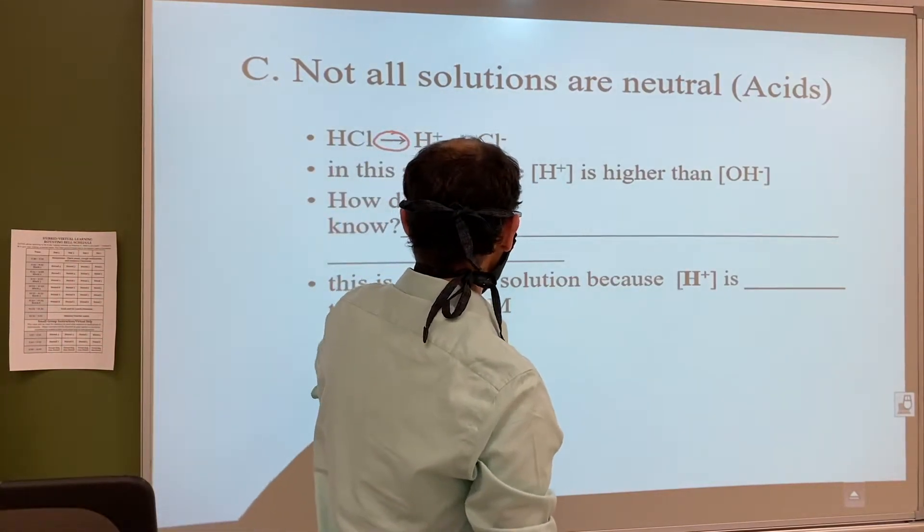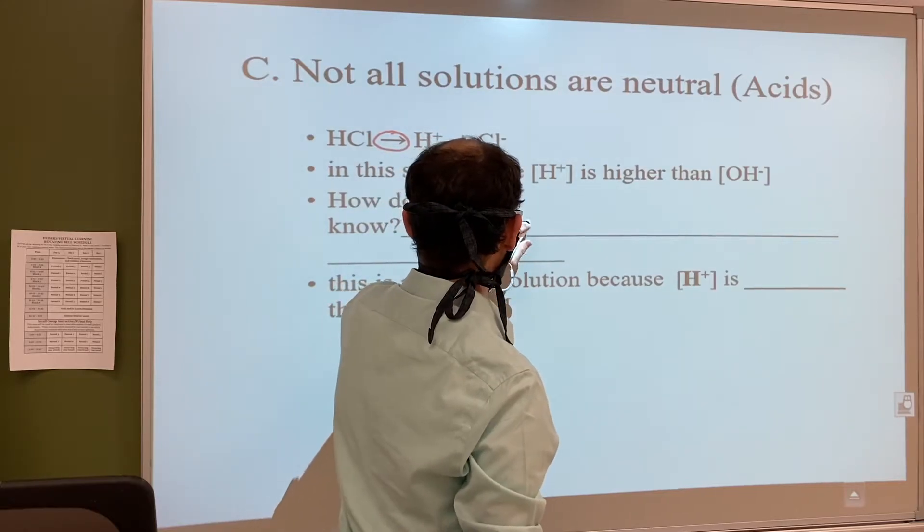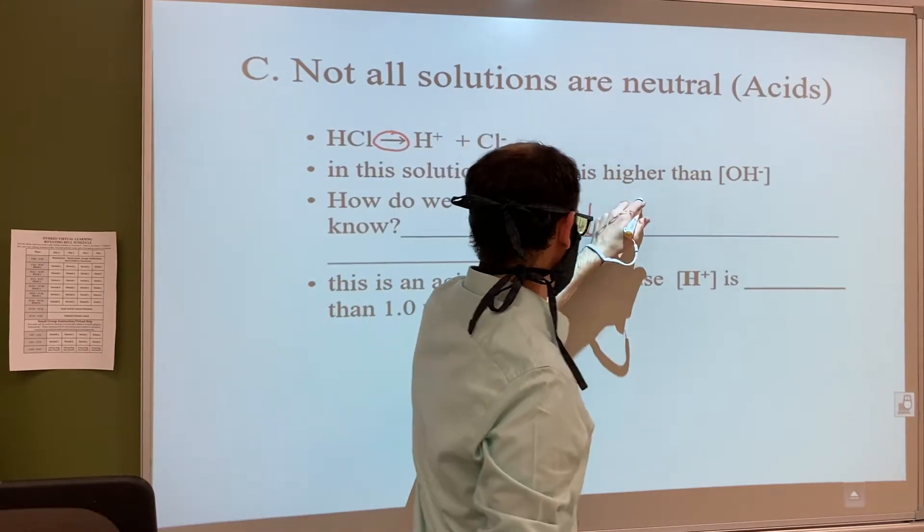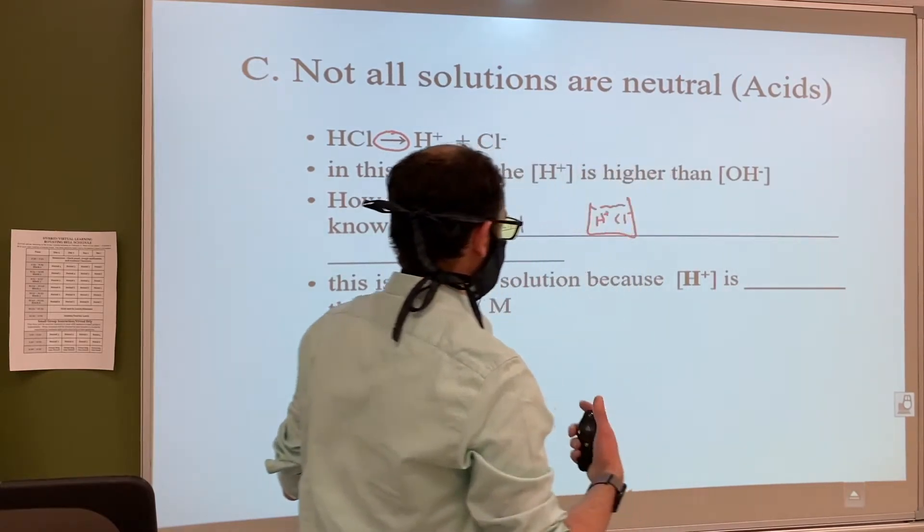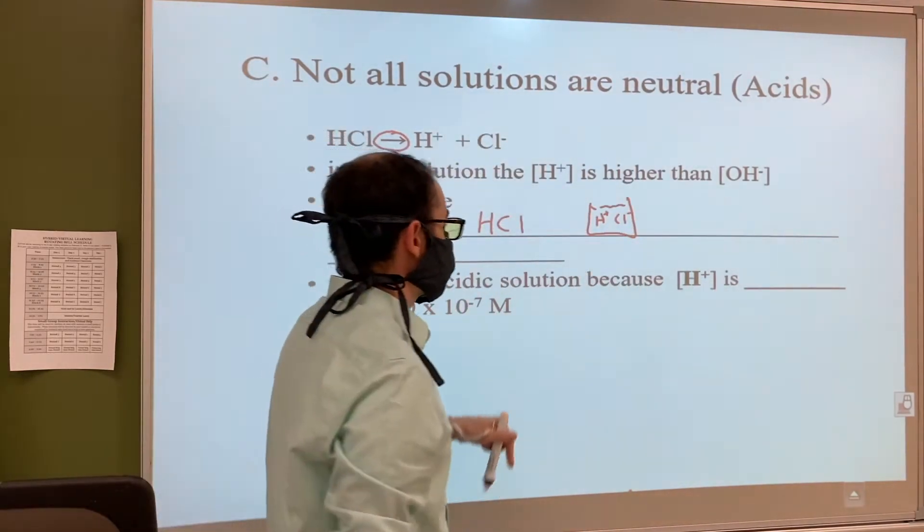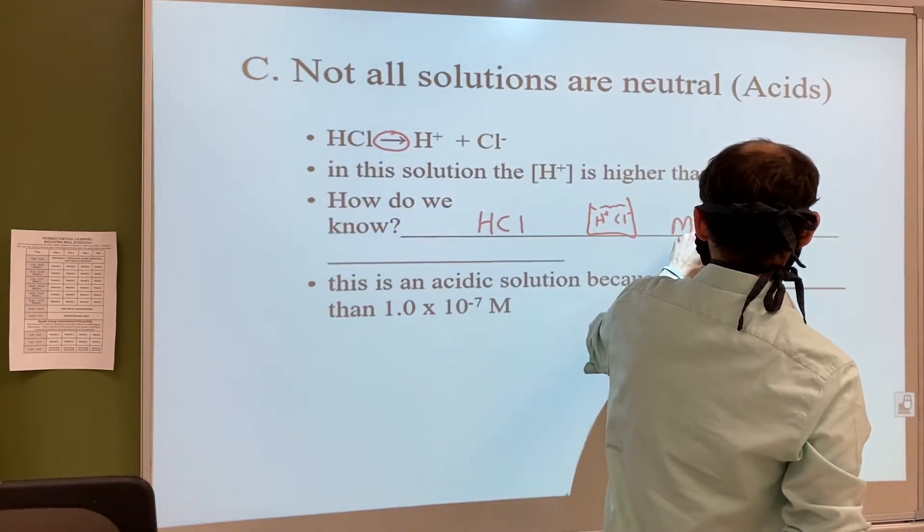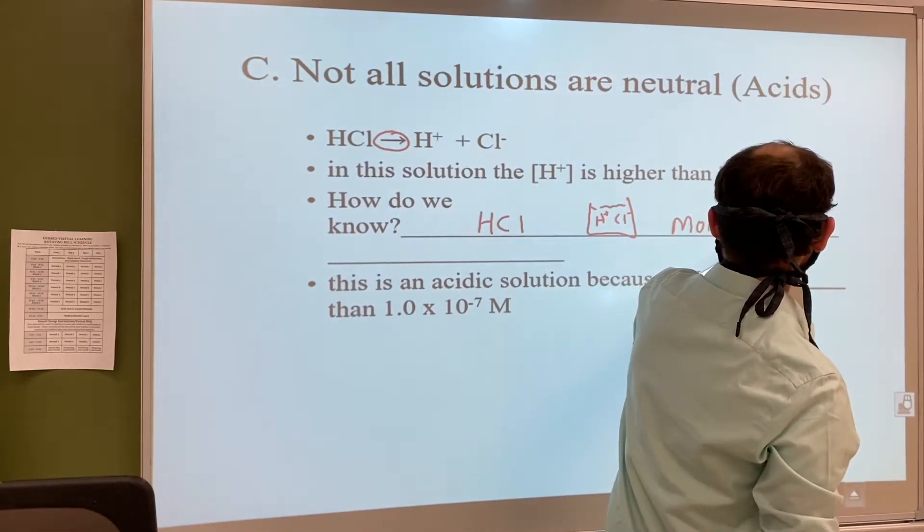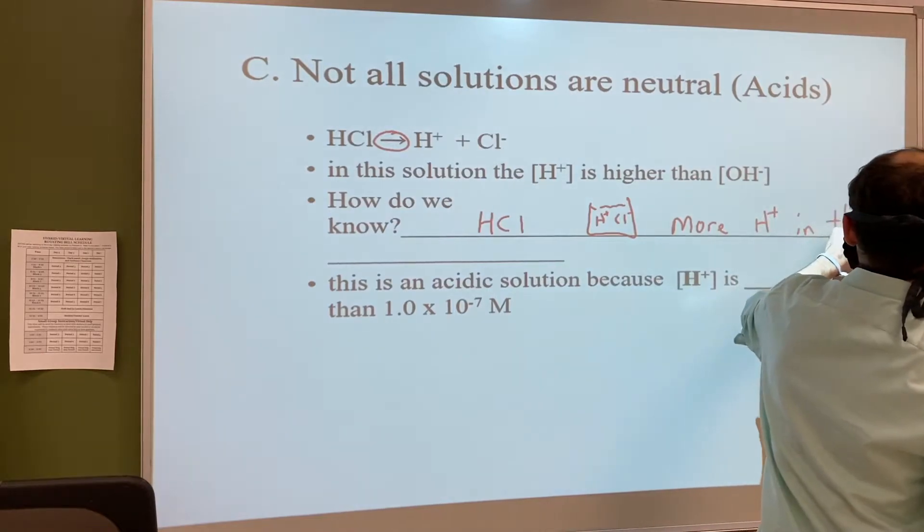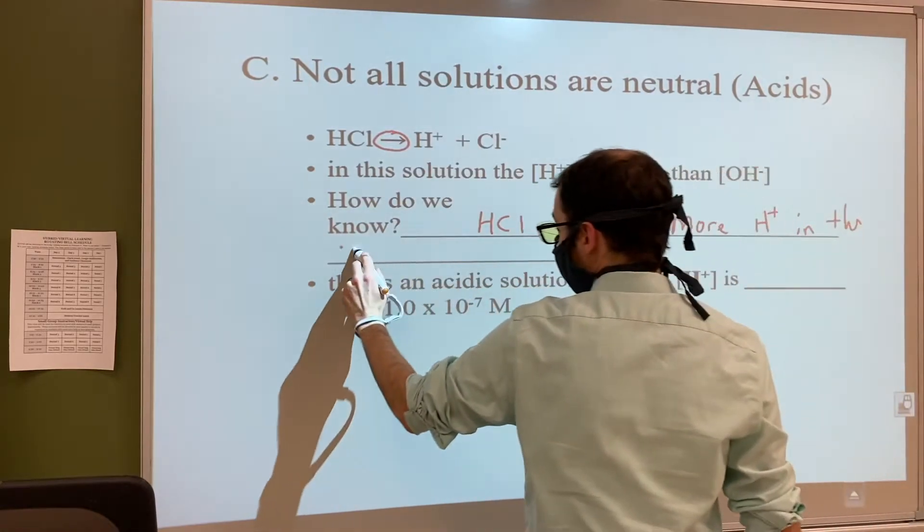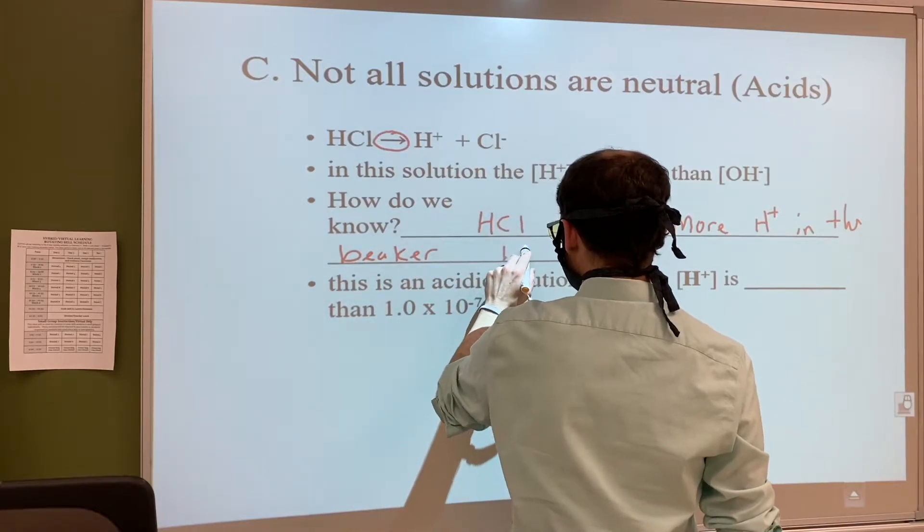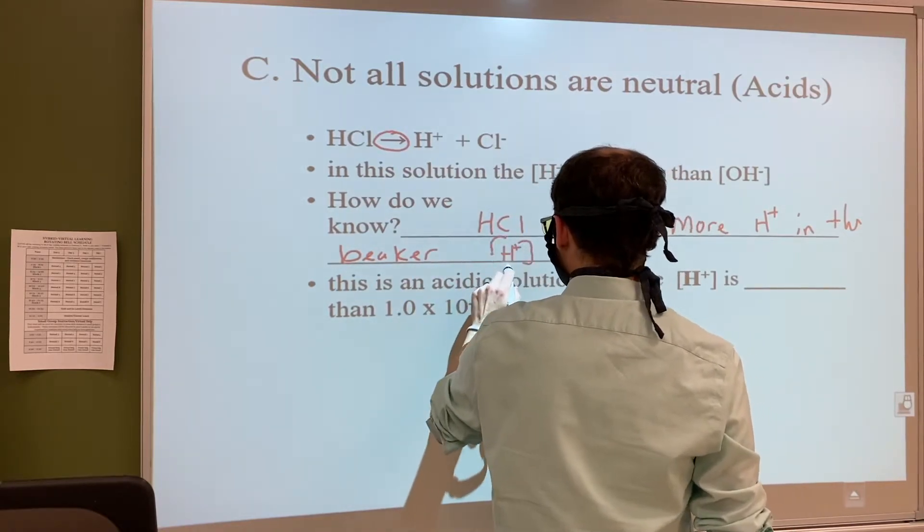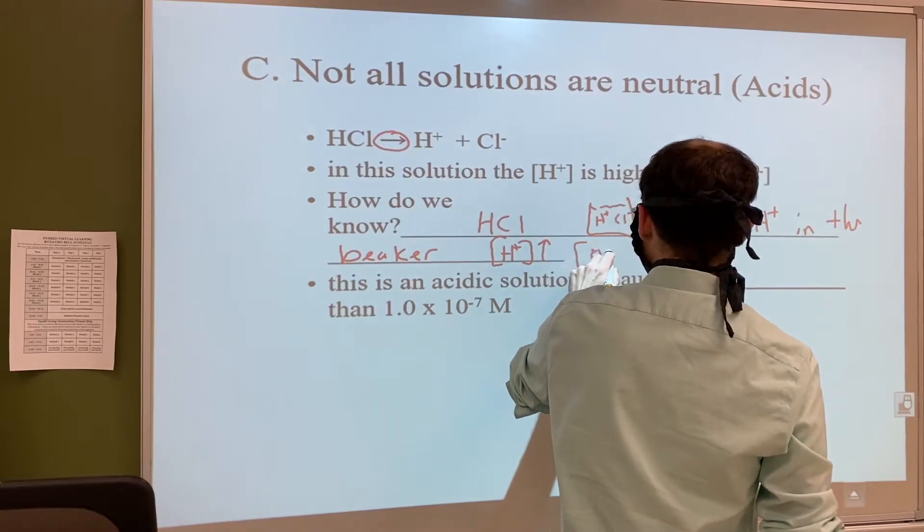How do we know that? Well, as you add HCl it's going to break up into H+ and Cl-, so there's just going to be more of it. There's going to be more H+ in the beaker. And as we said, if H+ goes up then OH- goes down.